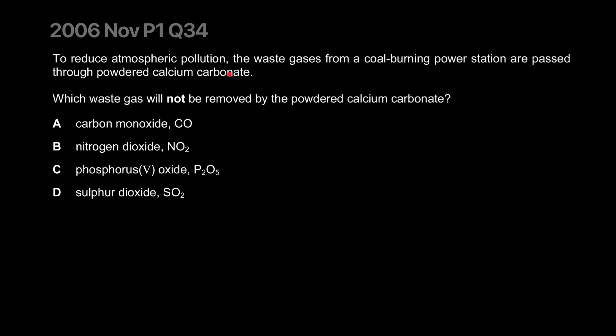To reduce atmospheric pollution, the waste gases from a coal burning power station are passed through powdered calcium carbonate. Which waste gas will not be removed by the powdered calcium carbonate? Carbon monoxide is very likely the case. Nitrogen dioxide is acidic which will be removed. Phosphoric oxide is not in the syllabus but it's acidic. Sulfur dioxide, this is what it's used for, is also acidic. So carbon monoxide is actually not acidic. Carbon dioxide on the other hand is and will be removed.